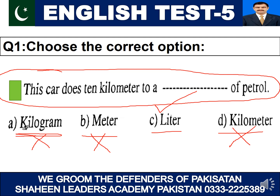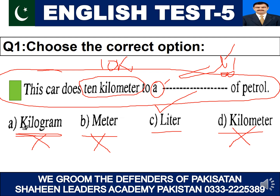Ultimately the right answer of question number one is: 'This car does ten kilometers to a liter of petrol.' The word 'a' used here is an indefinite article, meaning 'one' — that is, one liter. The car covers a distance of ten kilometers on one liter of petrol. The correct answer is option number C.